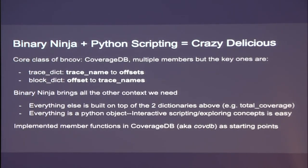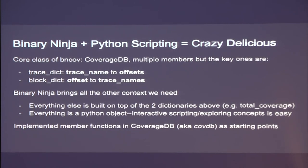DynamoRIO is just a cross-platform tool that's freely available. If you want to bring in coverage data in some other format, that totally works. The DRCov format was used by Lighthouse and a few others, so it's a common one. Beyond this simple two-dictionary abstraction, everything else is brought in by Binary Ninja's ability to script over the basic ideas of the target. There's really not a whole lot of magic in BNCov other than the CoverageDB — it's just a couple of member data structures and helper functions.